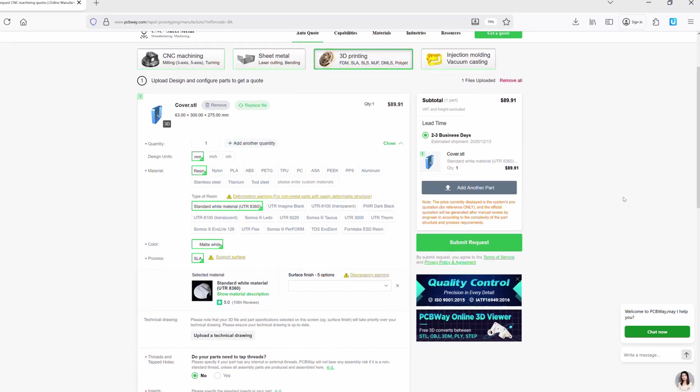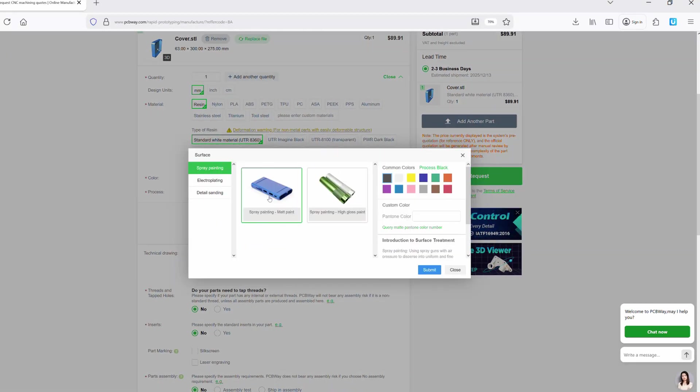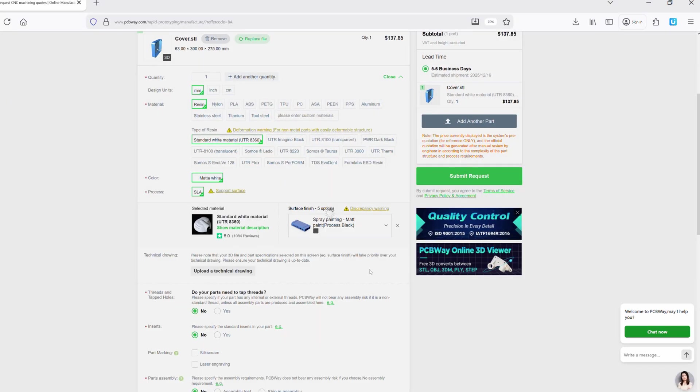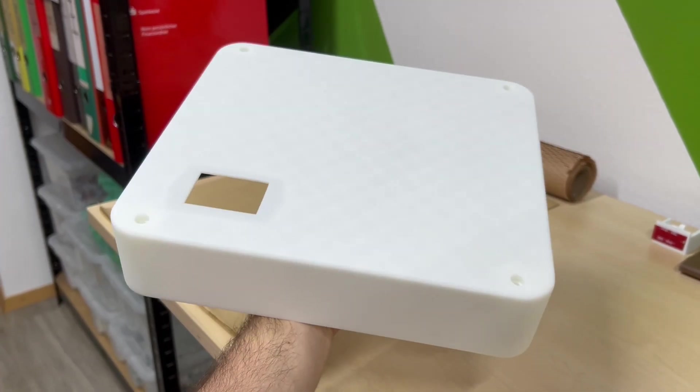The process is really simple, you upload an STL on the PCBWay platform, you get an instant quote, and you can choose your materials and the surface finish, and they ship the parts straight to your door.